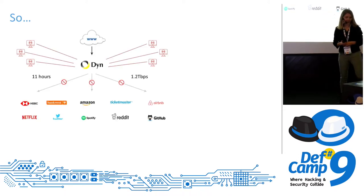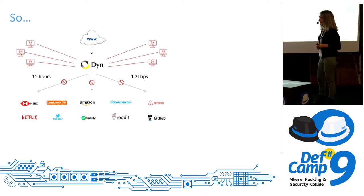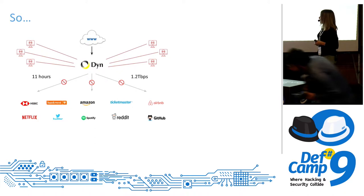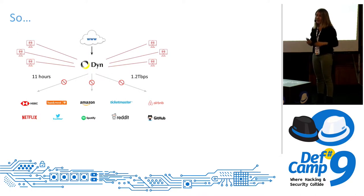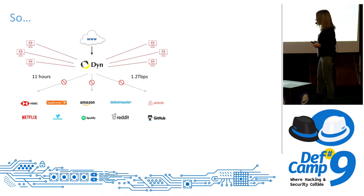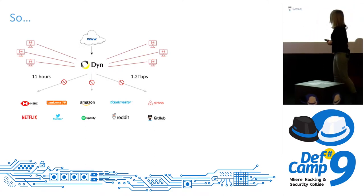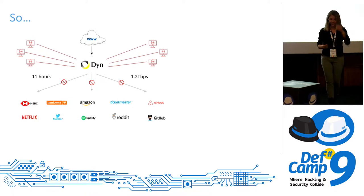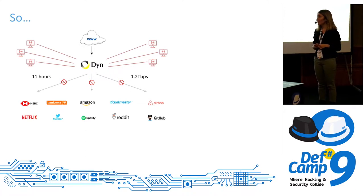Back in 2016, Dyn, one of America's most important DNS providers, got hit for 11 hours with a DDoS attack which peaked at 1.2 terabits per second. This meant that important businesses such as Amazon, banking, GitHub, LinkedIn, could not be reachable through DNS for 11 hours. They could only be reached with IP.